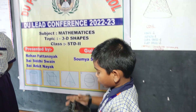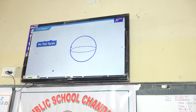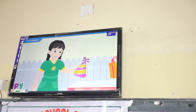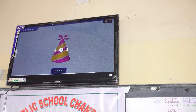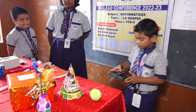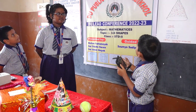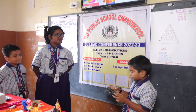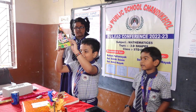Let us see the video. A sphere has no flat faces, no edges, no vertices. A cone has one flat face. Let's learn about the cone. One curved face, one curved face.